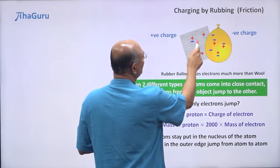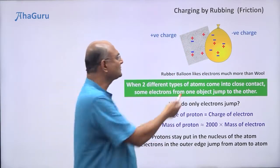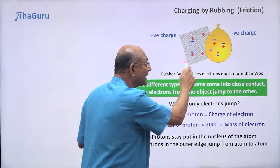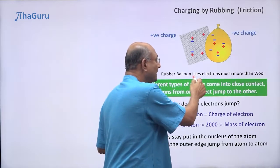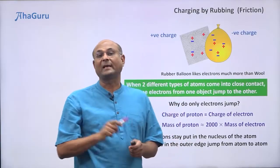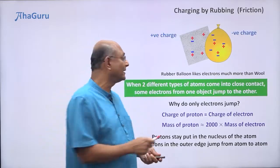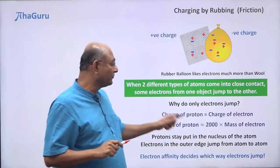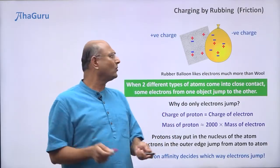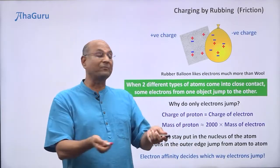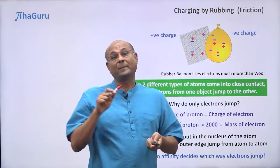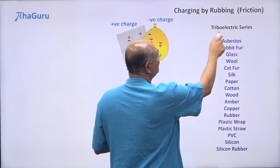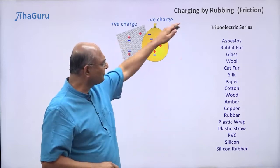So the electrons from the wool jump to the rubber balloon. Why didn't the electrons from the rubber balloon jump to the wool? That is because the rubber balloon likes electrons much more. The technical term for this is electron affinity — affinity means like. So electron affinity decides which way the electrons jump. People have done many experiments and have come out with an entire series called the triboelectric series for different sorts of materials.